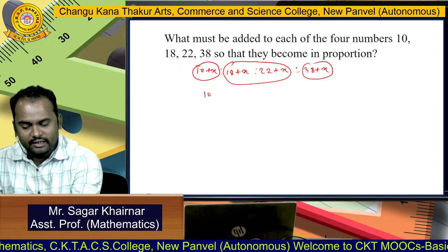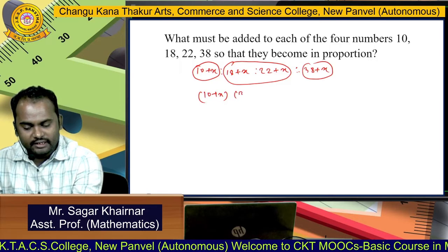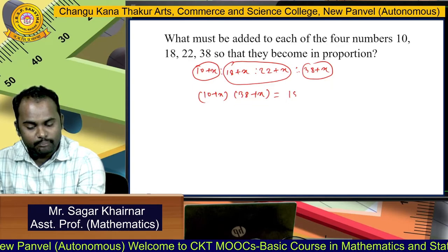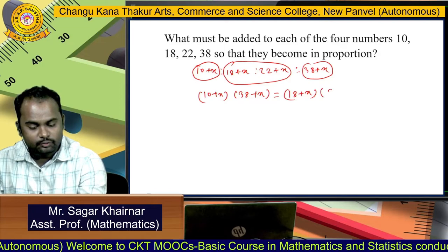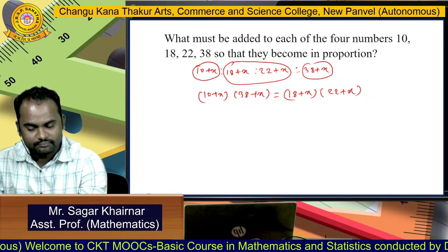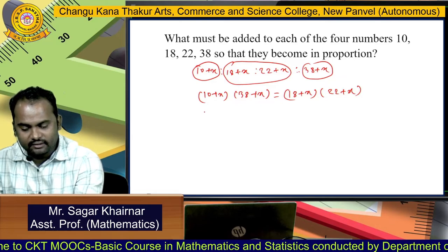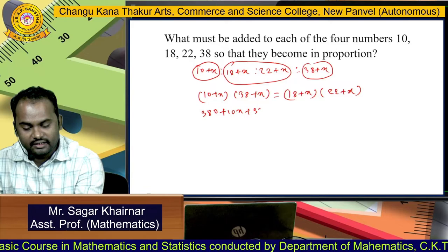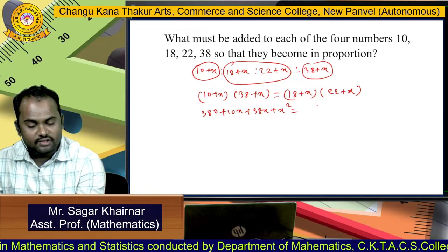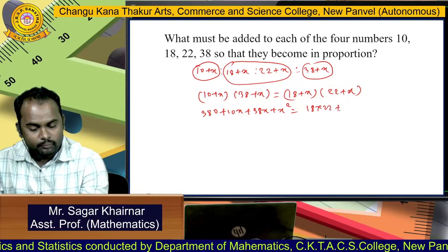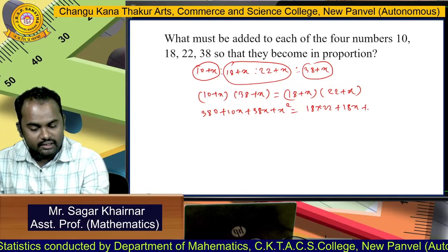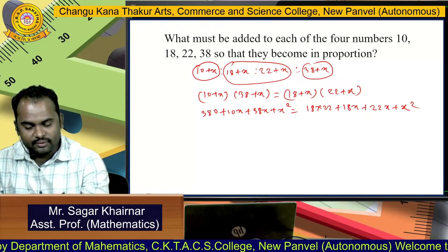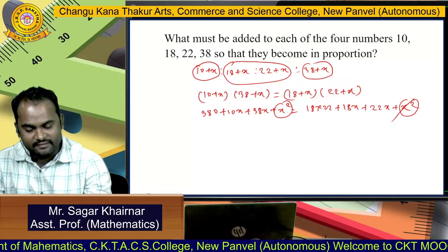So we write the product of extremes equal to the product of means: (10+X)(38+X) = (18+X)(22+X). Expanding both sides: 380 + 10X + 38X + X² = 396 + 18X + 22X + X².